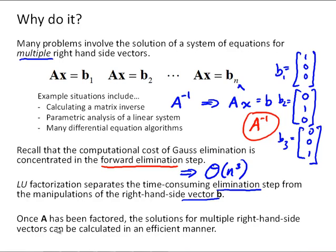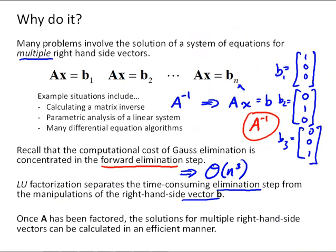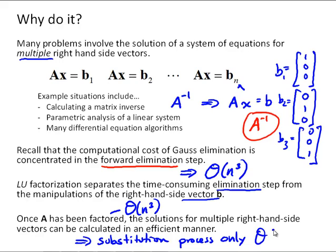What LU factorization does is separate the time-consuming elimination step from the manipulations of the right-hand side vector B. Once we factor A — and that factorization is order N cubed operations — we only have to do it once. Then we can solve for multiple right-hand side vectors using two triangular matrices, and that's a substitution process only, so it's order N squared.